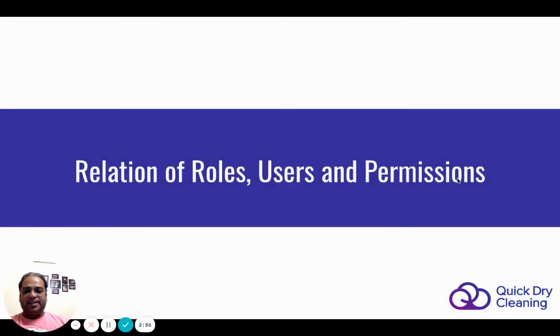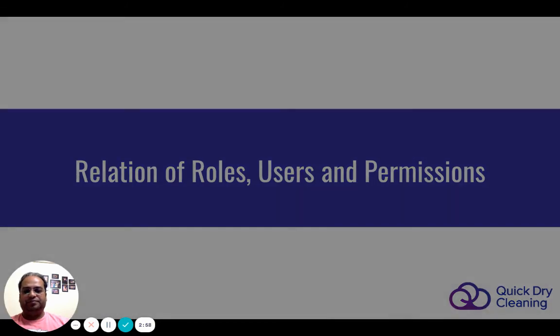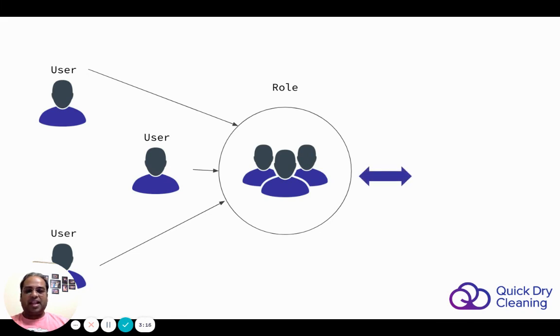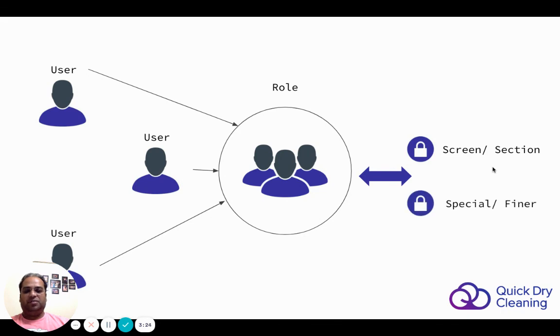Now let's understand the relationship between role, user, and permission. A user is an actual person — a POS operator, franchisee owner, or anyone who needs to log in. All these users are grouped into a role. Permissions are then assigned to a role, not to the individual user. There are two types of permissions: screen-level and special or finer controls. This is how user management is done in QDC.